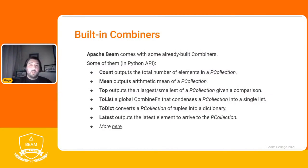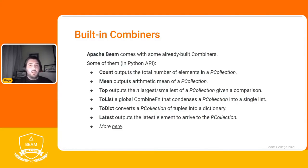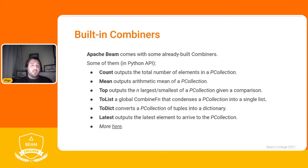Here are some combiners pre-built in Apache Beam, specific to Python (Java has similar but not identical ones). We have: Count, which counts elements; Min, which outputs the arithmetic minimum; Top, which outputs the N-largest or smallest given a comparison; ToList, which converts the P-collection to a list; ToDictionary, which makes it a dictionary; and Latest, which outputs the latest elements to arrive. For more built-in combiners, you can check the Python documentation for Apache Beam.